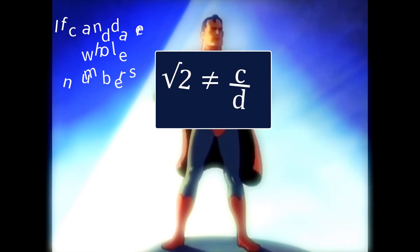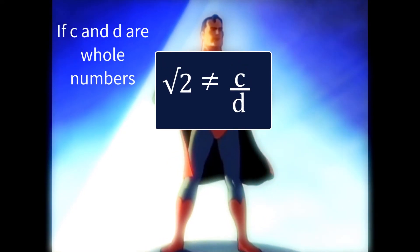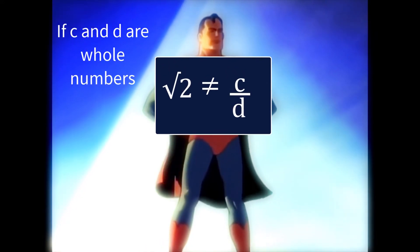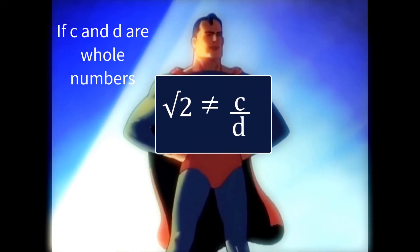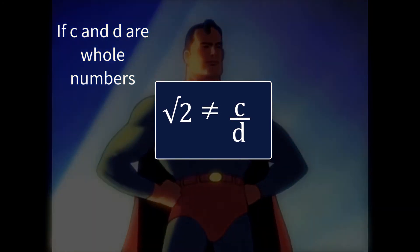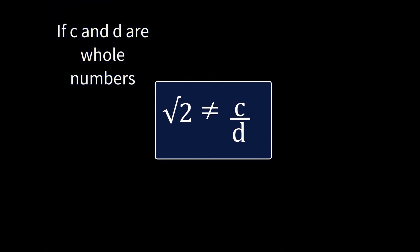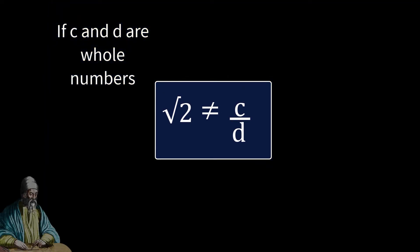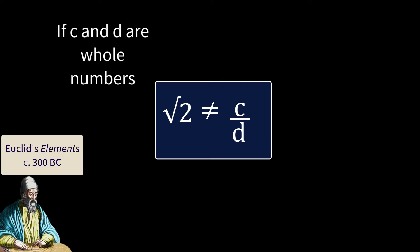I have a very special guest today who's going to show me how to prove that root 2 is irrational. In other words, there are no two whole numbers whose ratio is exactly root 2. It's not a bird, it's not a plane — it's actually Euclid himself, author of the greatest work of mathematics in history. Welcome, Euclid.